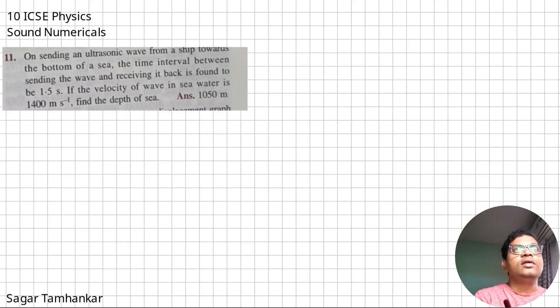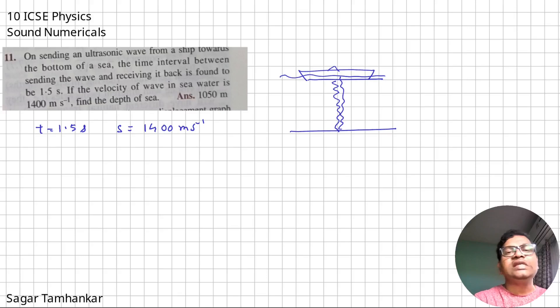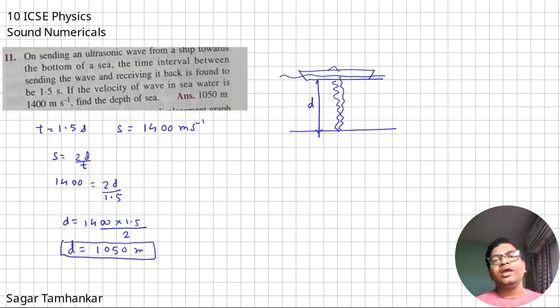This is similar to many questions that we have done so far. On sending an ultrasonic wave from a ship toward the bottom of the sea, the time interval between sending the wave and receiving it is 1.5 seconds. So this is an echo question, and the speed is given to be 1400 meters per second. Again, students, if you want to understand why or how do we understand this is echo, you can see that the wave is sent from the ship and the wave is received by the ship. So the source and the observer is same. Therefore, we take it as an echo question. We get it as 1050 meters.